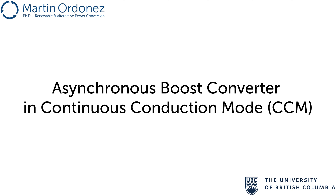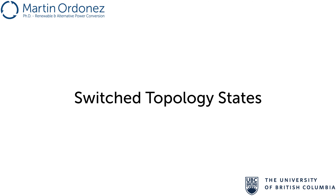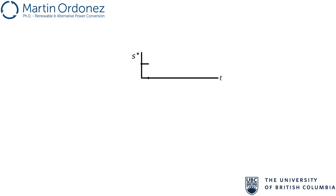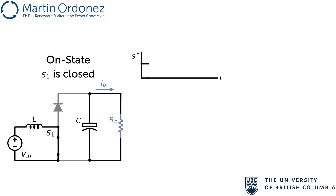Usually, the asynchronous boost converter is designed to operate in continuous conduction mode. That is, the operating range is selected so that at all times the inductor current is positive, which ensures the diode is forward biased. If this condition is not met, the equations that describe the behavior of the converter will change. This switch topology, under continuous conduction mode, has two different states. When the control signal S is high, the controllable switch turns on, connecting the inductor to 0 volts (ground) and driving the inductor's current. During this time, the output RC circuit is disconnected from the input circuit because the diode is off. The output capacitor discharges, supplying the output current to the load.